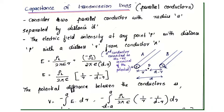E equals rho_l divided by 2 pi epsilon into the distance. The first distance is r subtracted by d minus r. The negative sign is because the second conductor is connected to the negative terminal of the potential. So E equals rho_l divided by 2 pi epsilon into 1 by r minus 1 by (d minus r).